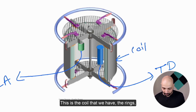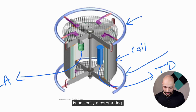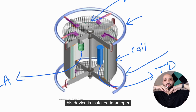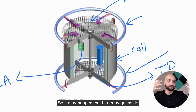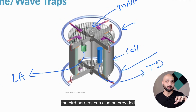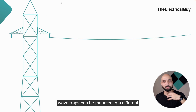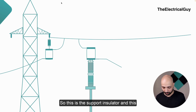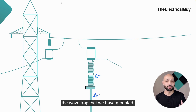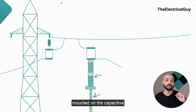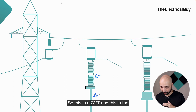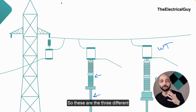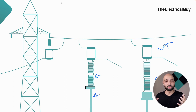The rings visible on the coil are corona rings. Since this device is installed in the open atmosphere and is hollow, bird barriers are also provided to prevent birds from entering. Wave traps can be mounted in different ways: directly on the gantry of the tower, on a dedicated support insulator with a support structure, or directly on a Capacitive Voltage Transformer. Not all substations will have wave traps — only those where power line carrier communication is used.